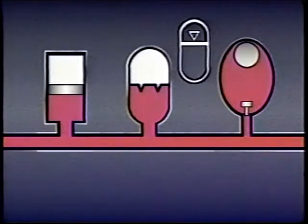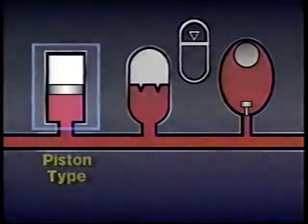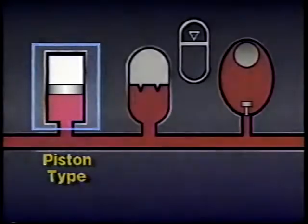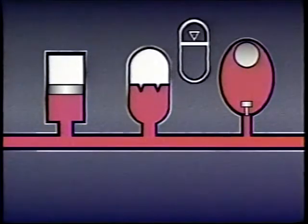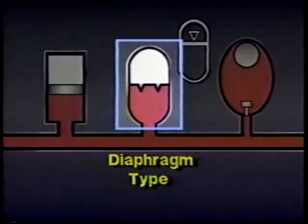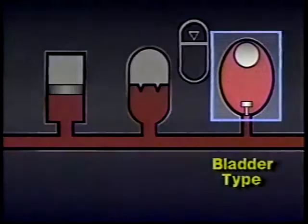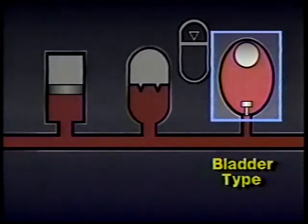There are several kinds of hydro-pneumatic accumulators. One kind has a moving piston which separates the gas from the hydraulic fluid. A second kind uses a flexible diaphragm. And the third kind uses a rubber bag or bladder inside a steel shell or housing.